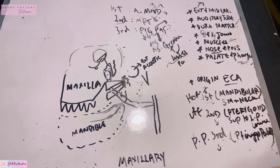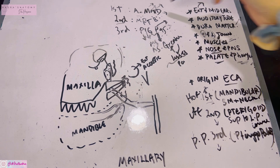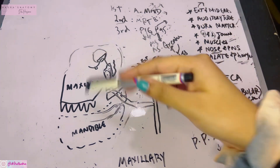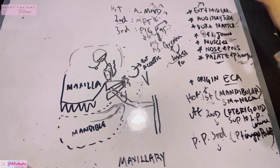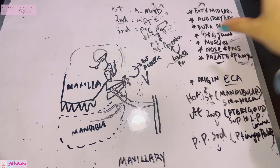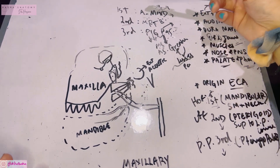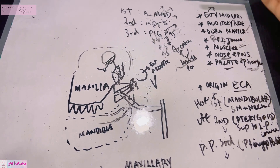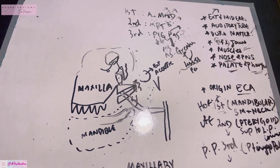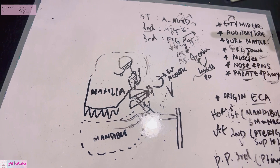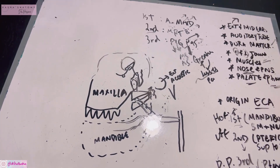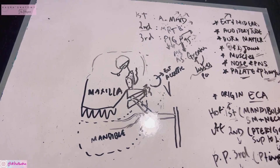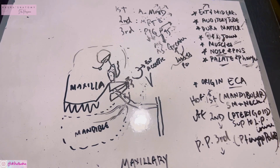Overall, that is the gist of the maxillary artery — its parts and shortcuts for memorization. Memorize the supplies, memorize the mnemonics, remember the diagram, and you are good to go. If you just remember that auricular means ear, meningeal means dura, and superior or inferior alveolar relates to the upper or lower jaws, it becomes easy.